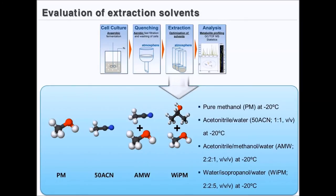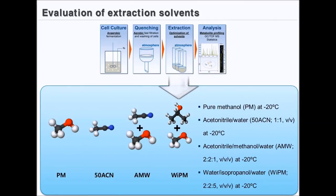We evaluated and optimized extraction solvents for Clostridium acetobutylicum. For metabolite profiling of Clostridium acetobutylicum, AMW is commonly used. However, AMW was originally used as the optimal extraction solvent for E. coli. As Clostridium acetobutylicum and E. coli significantly differ in terms of the structure of their cell envelopes and their physiology, it is necessary to establish optimal extraction solvents especially for Clostridium acetobutylicum. In PCA results, the four groups were clearly separated at acetogenic and solventogenic phases.